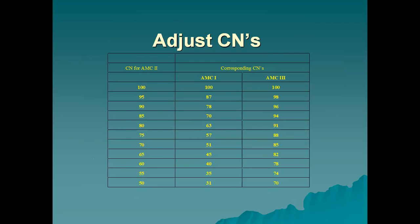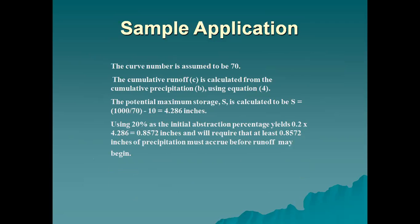Sample application: the curve number is assumed to be 70. The potential maximum retention S is calculated as (1000/70) − 10 = 4.286 inches. Using 20% as the initial abstraction percentage yields IA = 0.2 × 4.286 = 0.857 inches, meaning at least 0.857 inches of precipitation must accumulate before runoff may begin.